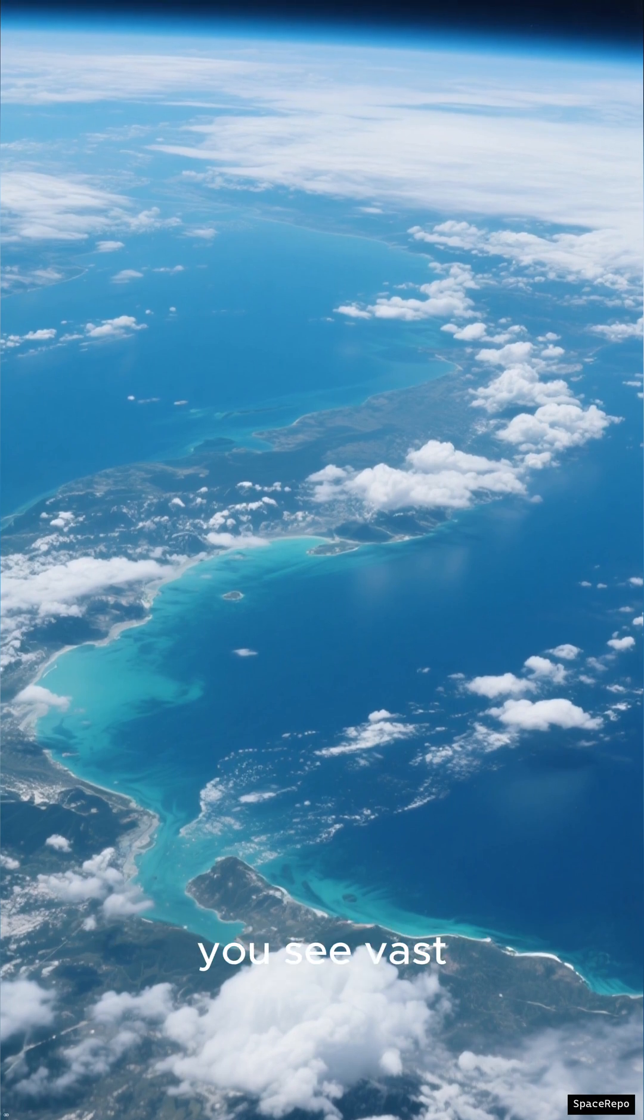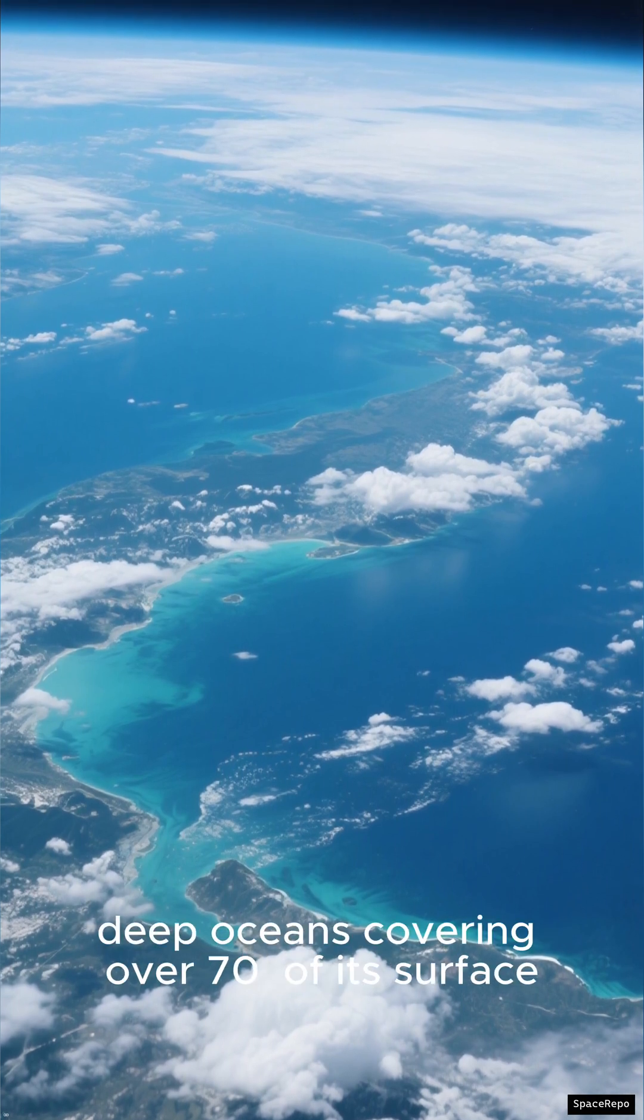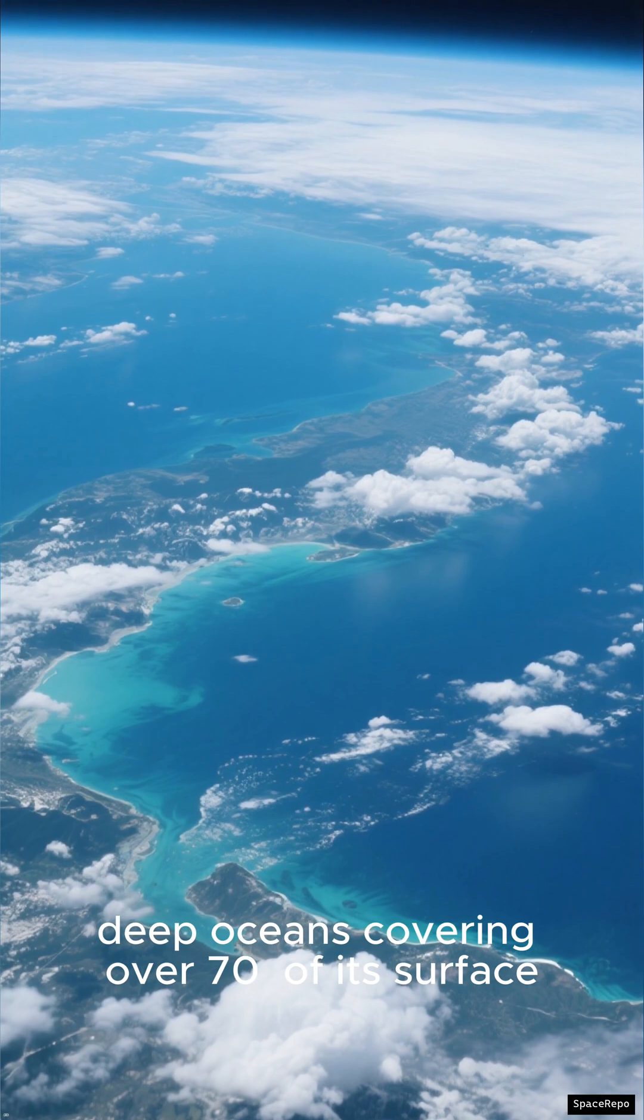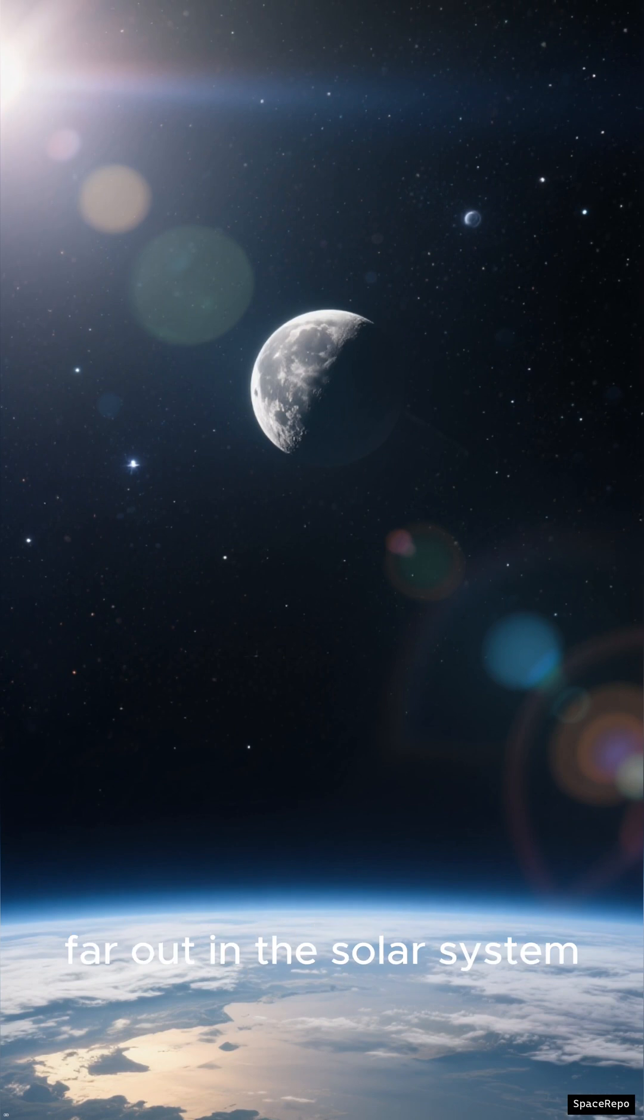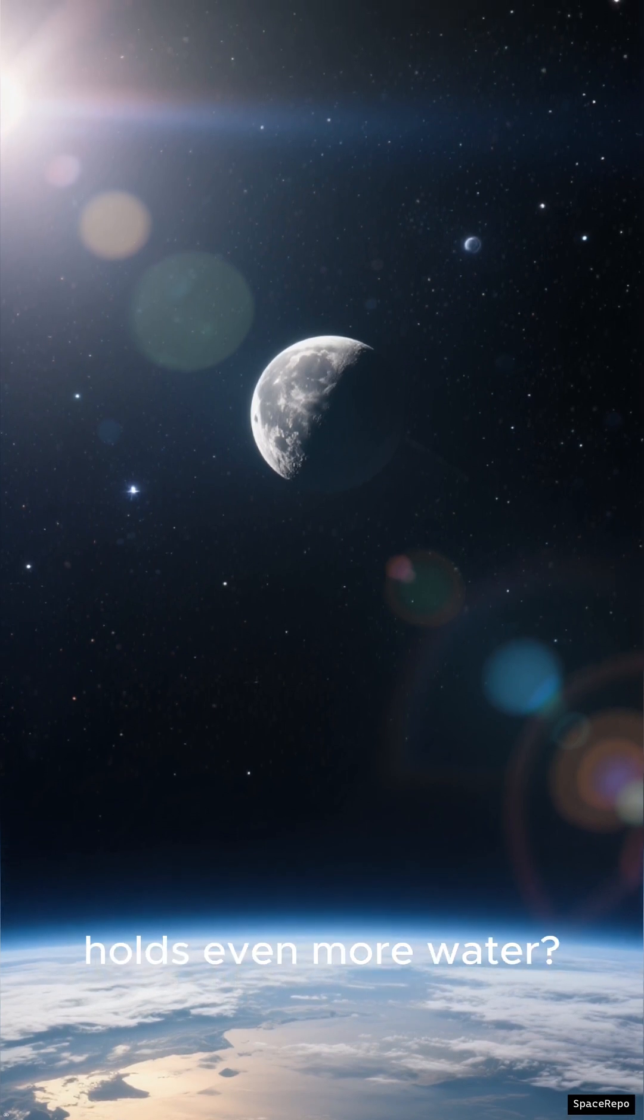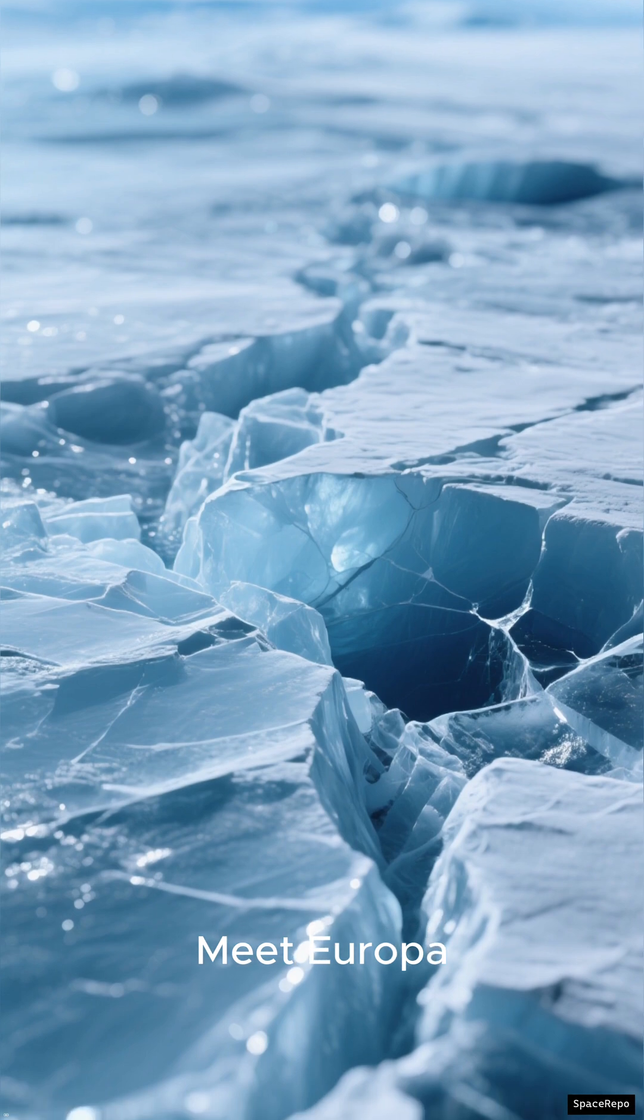When you gaze upon our planet, you see vast deep oceans covering over seventy percent of its surface. But what if I told you that a tiny moon far out in the solar system holds even more water? Meet Europa, one of Jupiter's many moons.